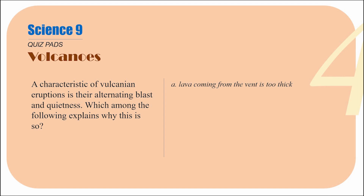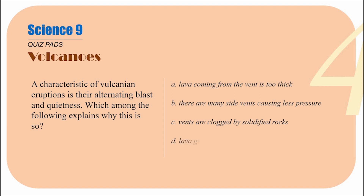Is it letter A — because lava coming from the vent is too thick? Is it letter B — there are many side vents causing less pressure? That option is fundamentally correct, but is it what we're looking for? Is it letter C — vents are clogged by solidified rocks? We know there is a chance for magma to solidify into rocks. Is this the answer we're looking for? Or is it D — lava gets shot up to the atmosphere? Check these options carefully.